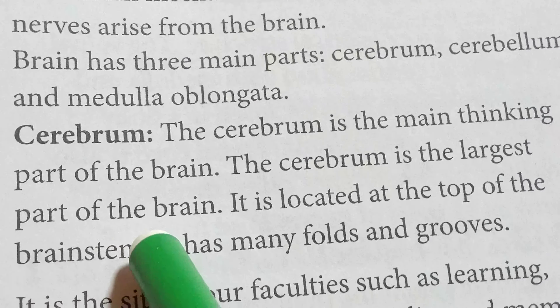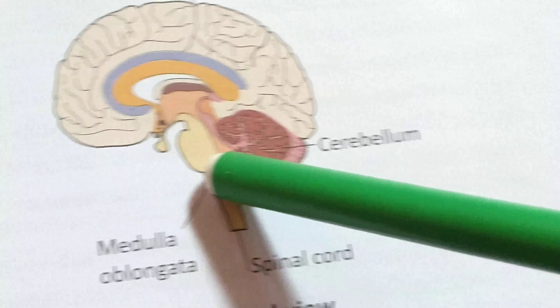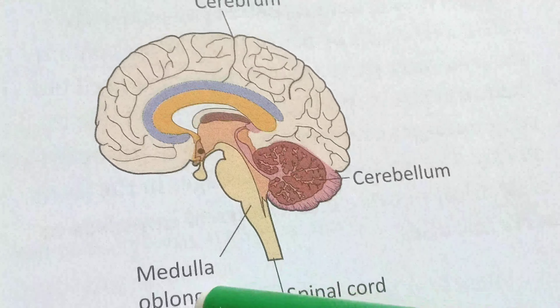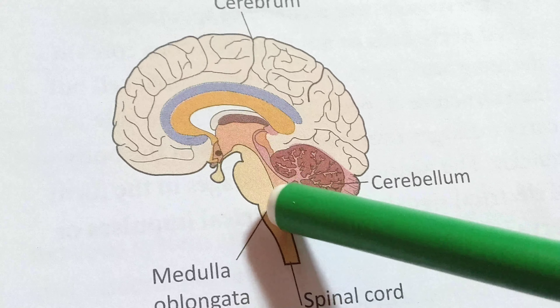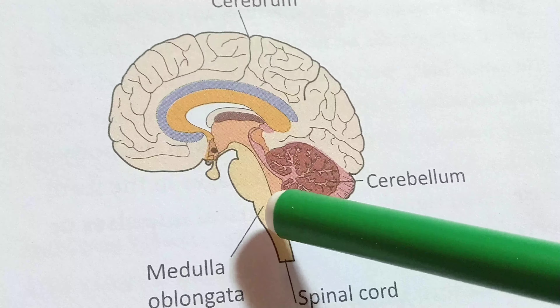The cerebrum is located at the top of the brain stem. It has many folds and grooves. The medulla oblongata is also known as the brain stem, and the cerebrum sits above it.